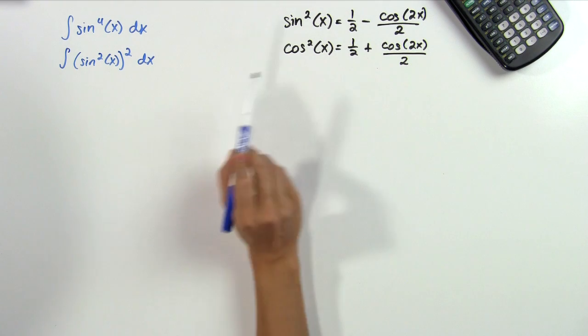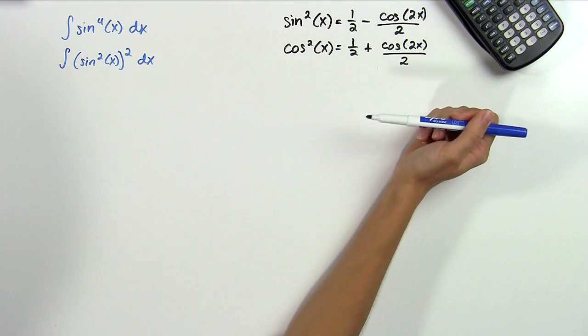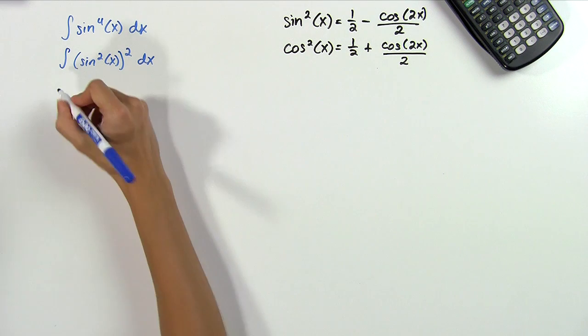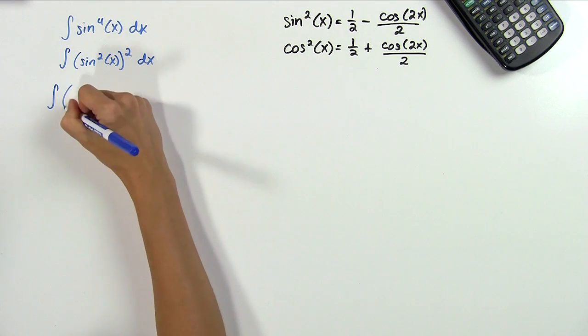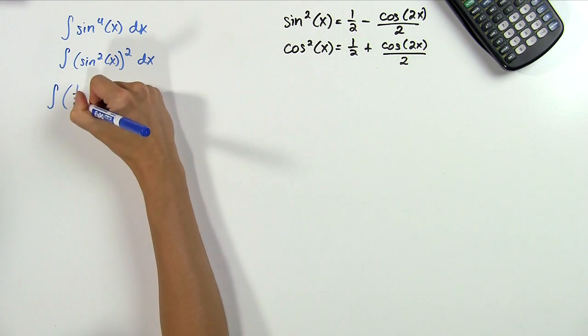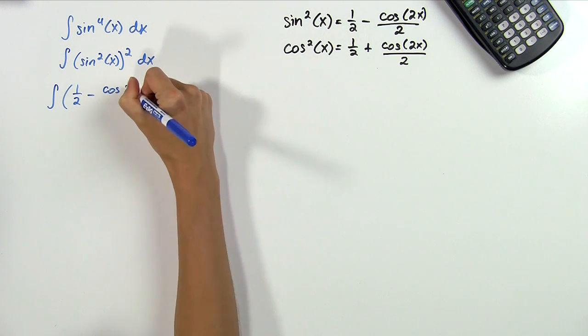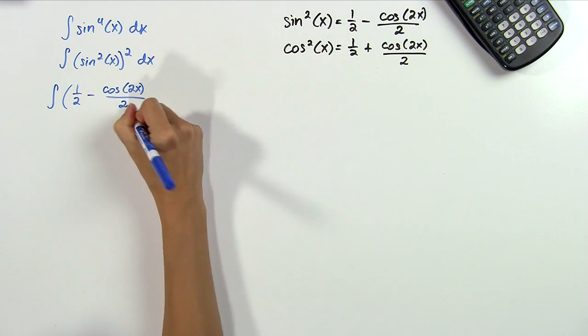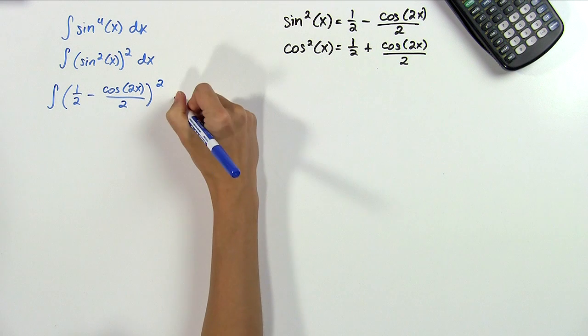Now we can go ahead and do the substitution, substituting 1 half minus cosine 2x divided by 2. So we get the integral of 1 half minus cosine of 2x divided by 2 all squared dx.